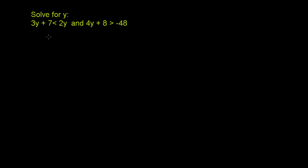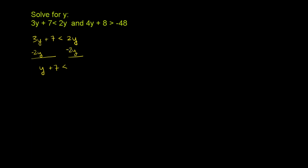So let's just solve for y in each of the constraints, and just remember that this 'and' is here. We have 3y plus 7 is less than 2y. Let's isolate the y's on the left-hand side. So let's get rid of this 2y on the right-hand side by subtracting 2y from both sides. The left-hand side, we have 3y minus 2y, which is just y, plus 7 is less than 2y minus 2y, which is just going to be 0.